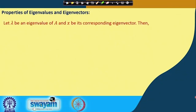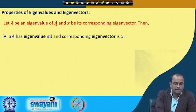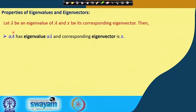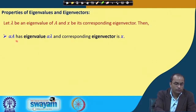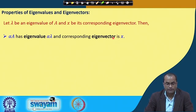Here the first property: if we have lambda as an eigenvalue of A and x as its corresponding eigenvector, then alpha times A has eigenvalue alpha lambda and the corresponding eigenvector is x. So alpha is some constant scalar quantity from the set of real numbers, and alpha A will have the eigenvalue alpha lambda.